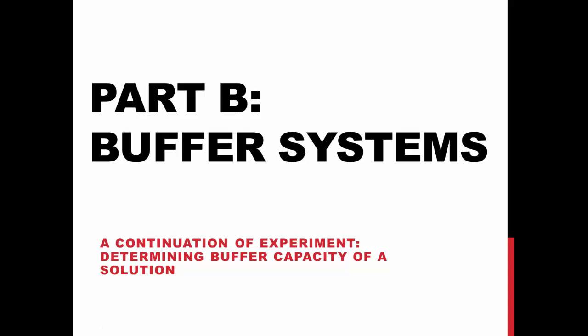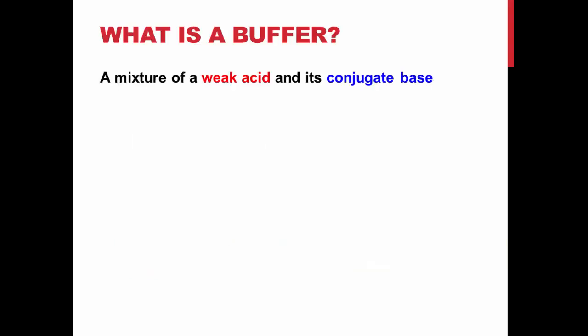This experiment is a continuation and takes a more in-depth look at buffer systems, such as those briefly examined in the first part of this experiment. A buffer is a solution consisting of a mixture of a weak acid and its conjugate base. These mixtures are able to resist changes in pH when small amounts of acid or base are added.